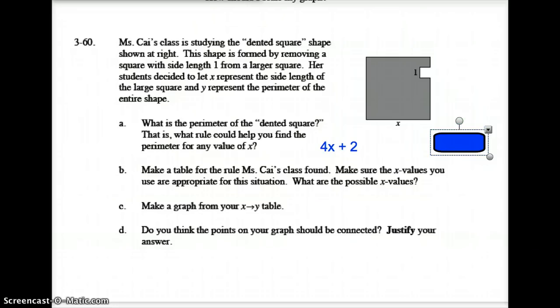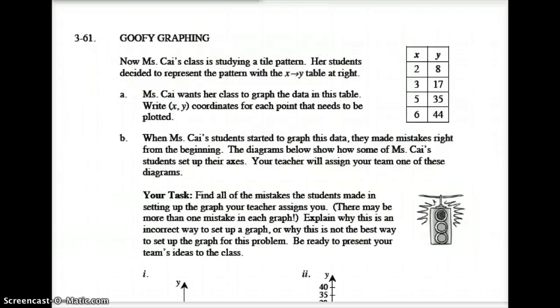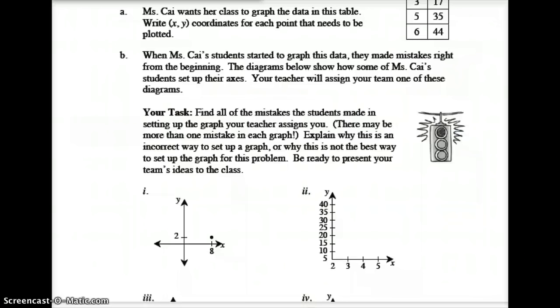But before we do, let's look at some graphs where we have some issues. Ms. Kite's class is trying to graph this table right here, where 2 equals 8, 3 equals 17, 5 equals 35, and 6 equals 44. But they had some issues. These weren't the brightest 8th graders on the planet. I'm sure this would not be you.